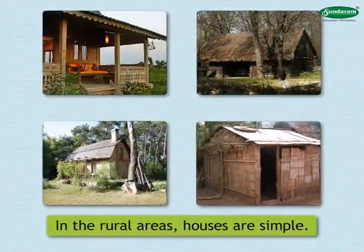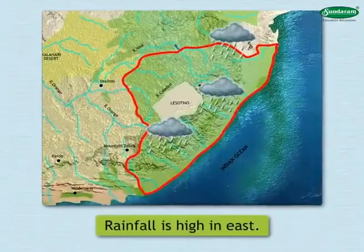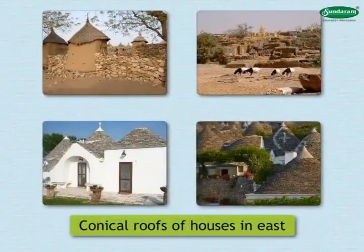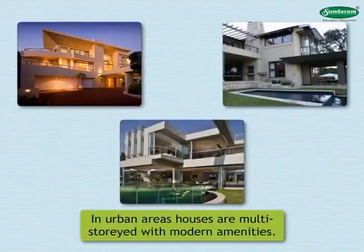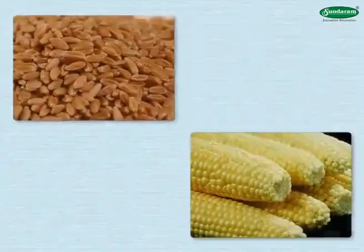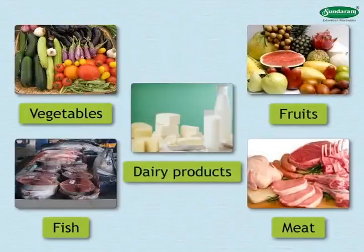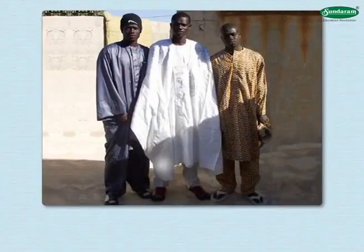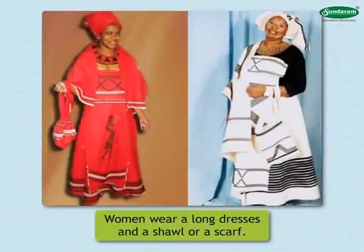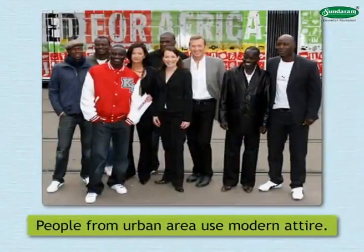In rural areas, houses are simple with thick walls and flat roofs. In the east, where rainfall is high, houses have conical grass roofs and cylindrical mud walls. In urban areas, houses are multi-storied with all modern amenities. Items made of wheat and corn, along with vegetables, fruits, meat, fish, and dairy products form the diet. In rural areas, men wear trousers and a long coat or shirt with a cap or turban, while women wear long dresses with a shawl or scarf. People from urban areas use modern attire.